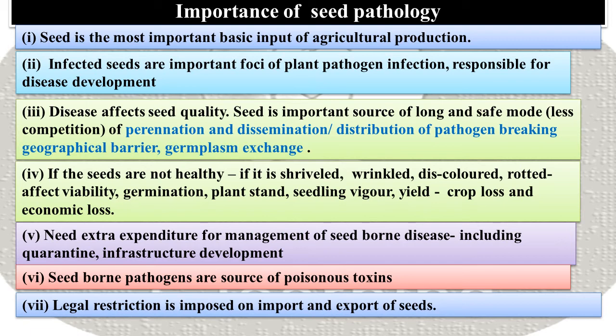If seeds are not healthy — if they are shriveled, wrinkled, discolored, rotted — it affects availability, germination, plant stand, seedling vigor, yield, crop loss, and economic loss. Extra expenditure is needed for management of seed-borne diseases including quarantine and infrastructure development. Seed-borne pathogens are also a source of poisonous toxins.